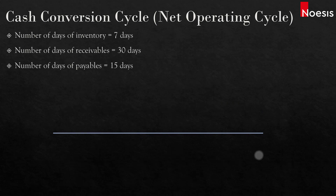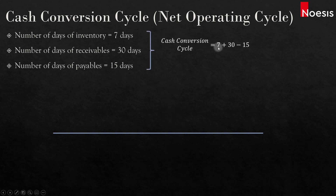Now let's take a look at the first example. The number of days of inventory is 7 days, the number of days of receivables is 30 days, and the number of days of payables is 15 days. Using the formula, the cash conversion cycle will be 7 plus 30 minus 15, which equals 22 days.